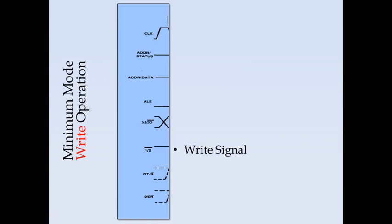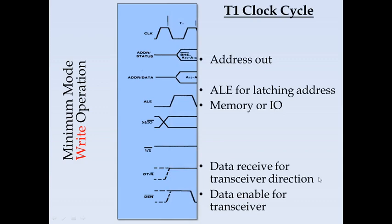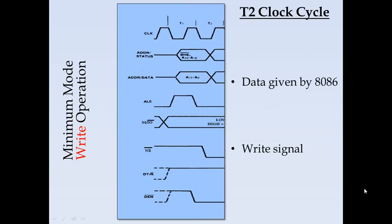The write operation signals are similar to the read operation except the WRITE signal is used instead of READ, and DT/R-bar is active high. During T1, the address is placed on all lines and ALE is asserted. Depending on whether it is a memory or I/O write, M/IO is high or low. Data enable is asserted so the transceiver is ready. During T2, the data is output by the 8086 to the peripheral and the WRITE signal is asserted.